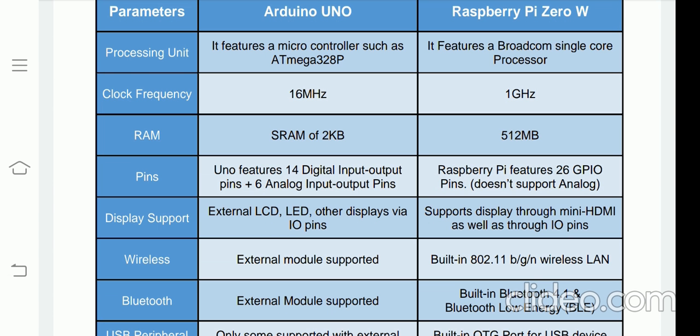For the Raspberry Pi 0W, it has 26 GPIO pins. It does not support any kind of analog pins — Raspberry Pi supports only GPIO pins, and it has 26 of them. You are all aware of what GPIO pins are and the uses of the various GPIO pins.